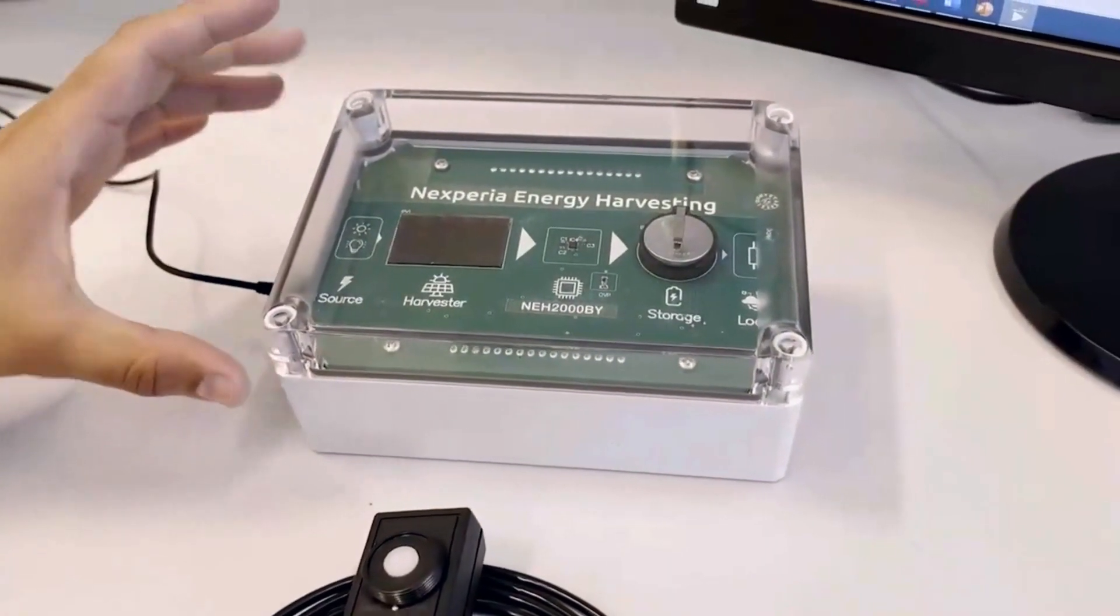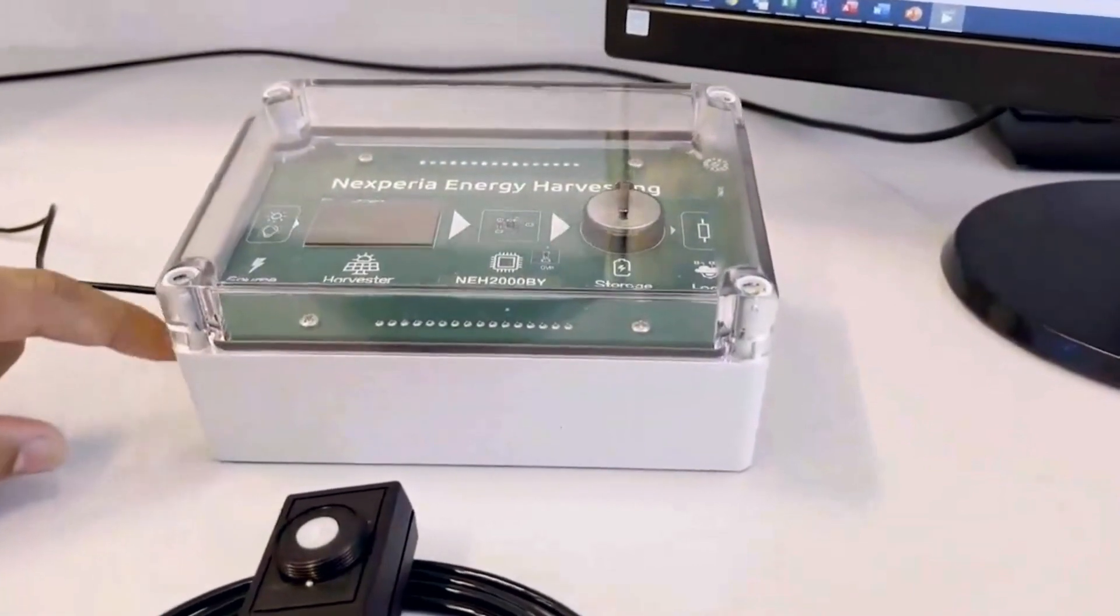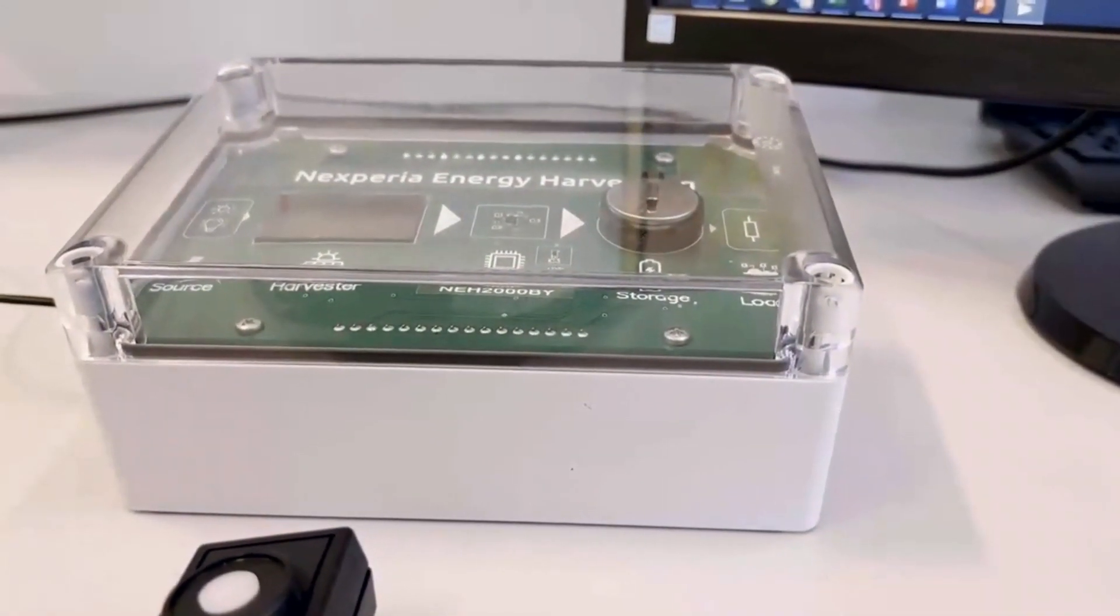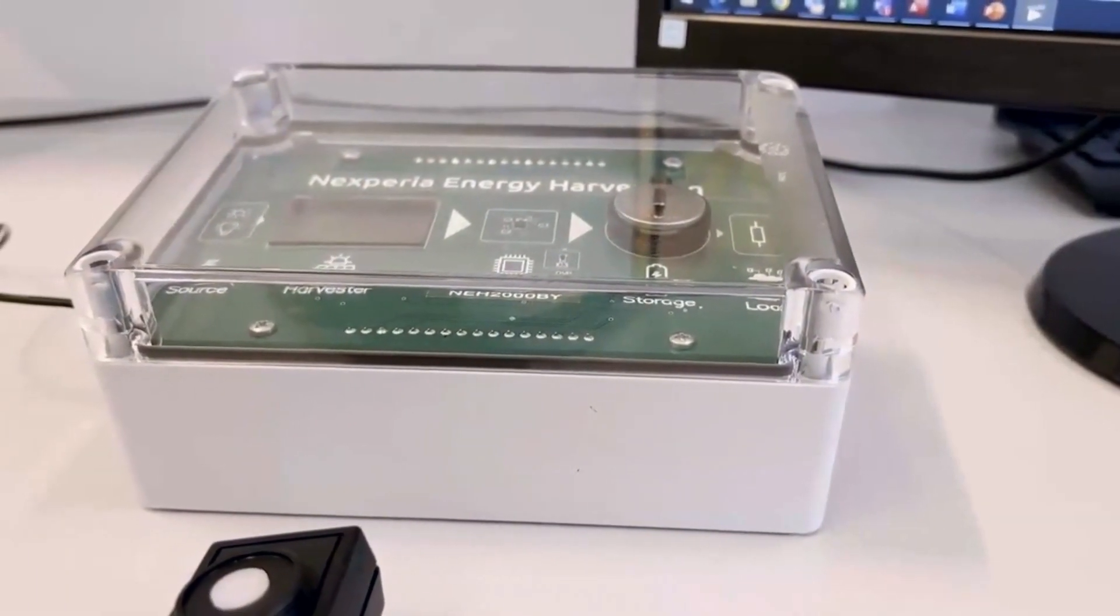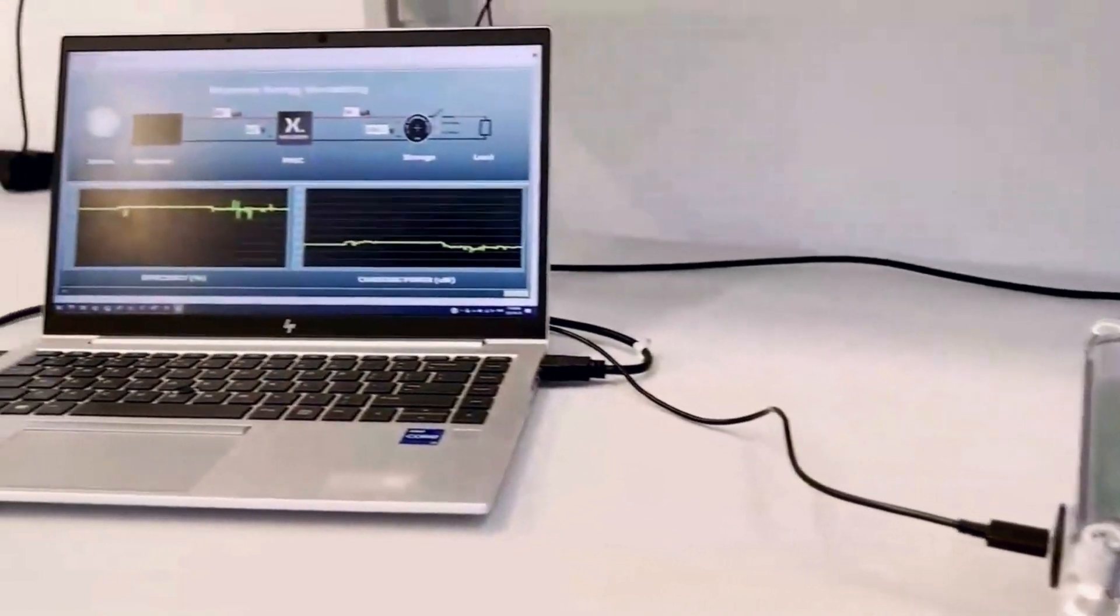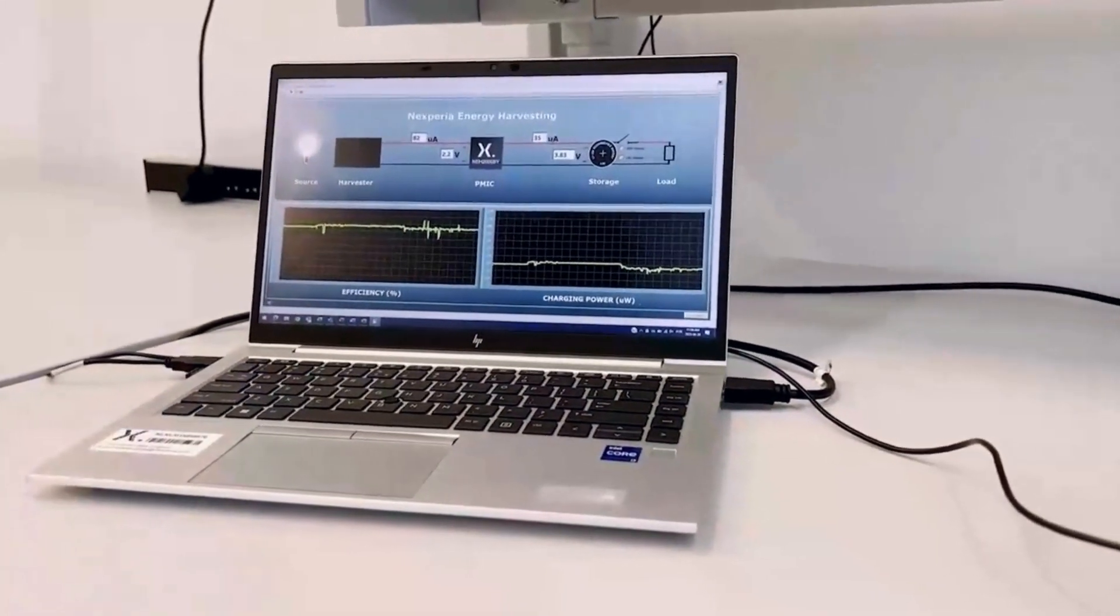This system, in this box we have all the measurement circuits to measure current, to measure voltage, and to calculate efficiency. As you can see here we have a cable and this box is connected to my PC. Let's see what is going on.